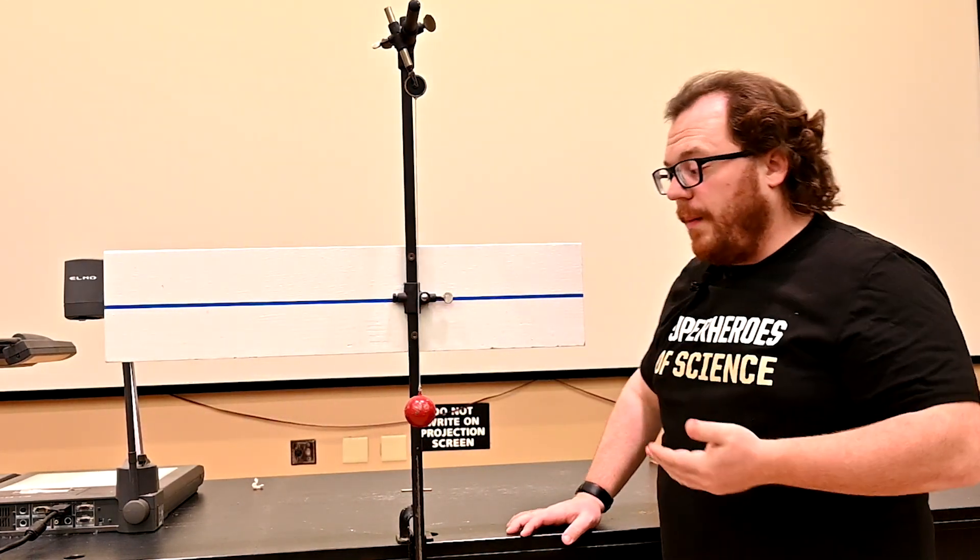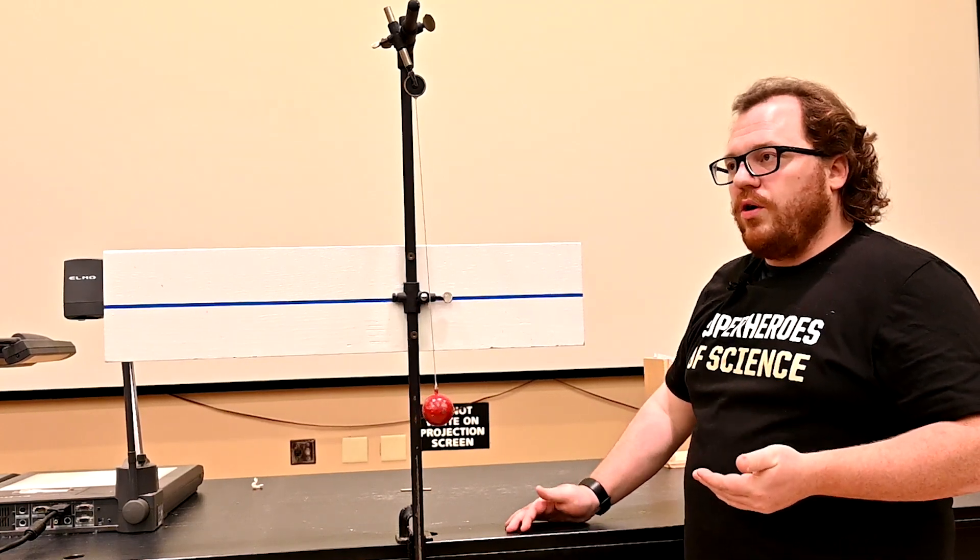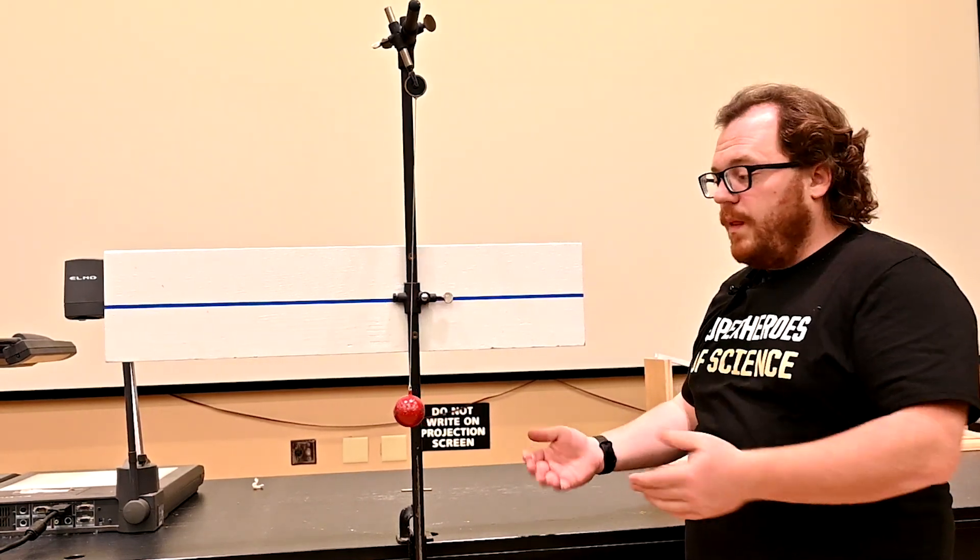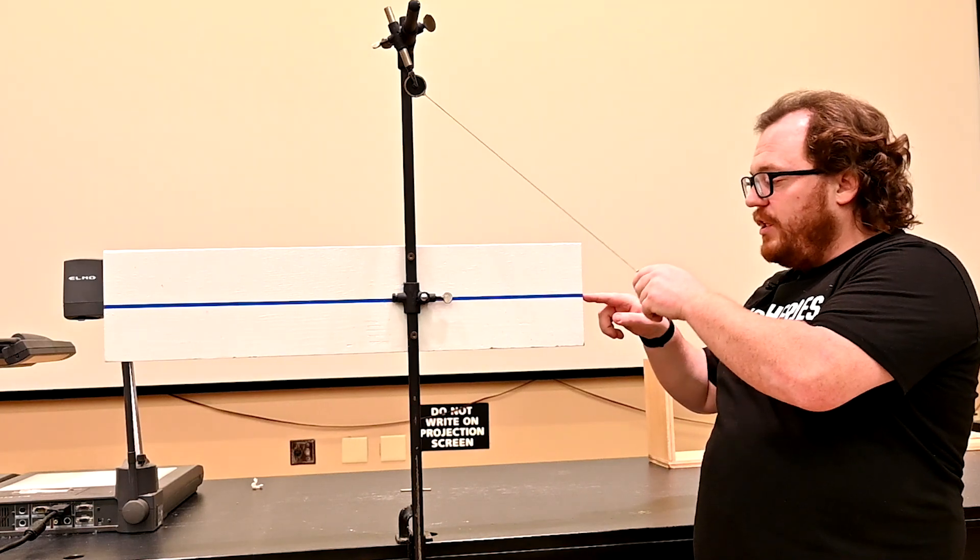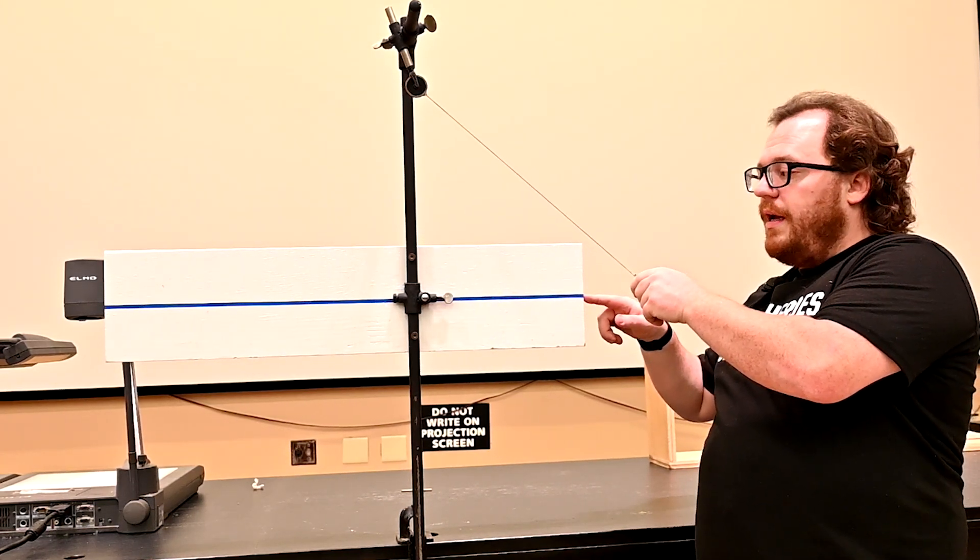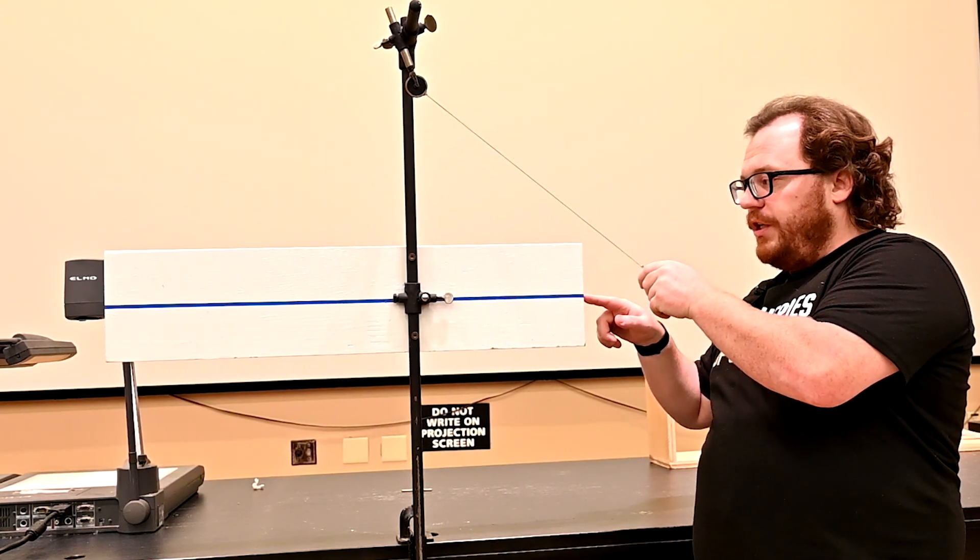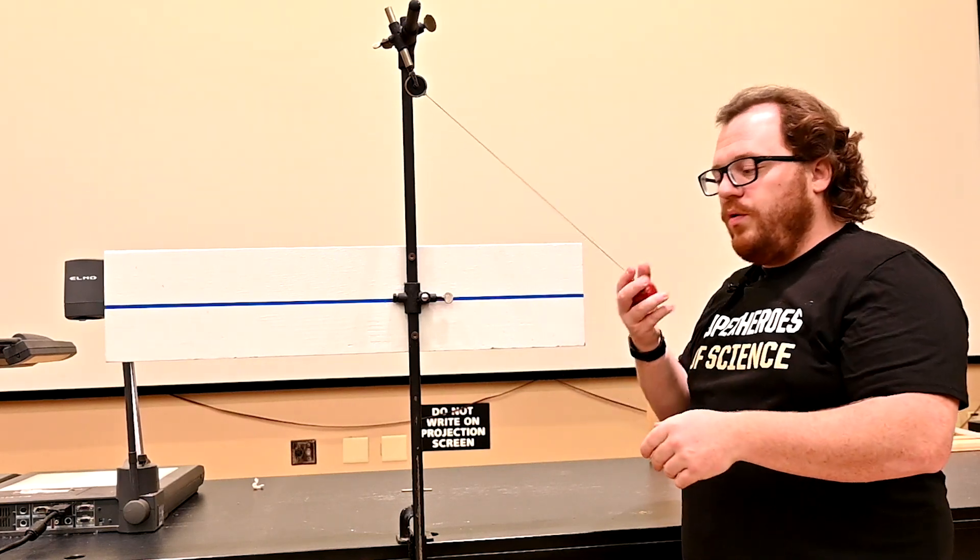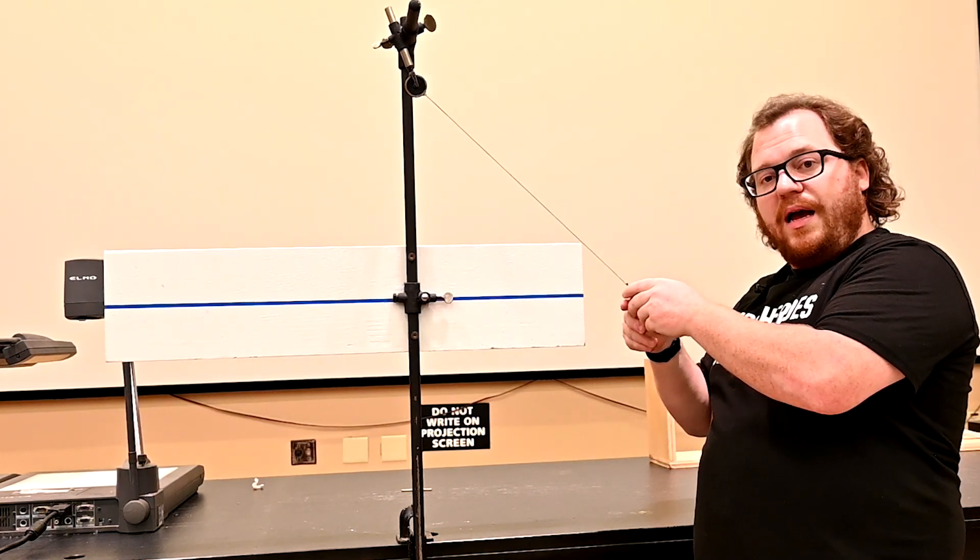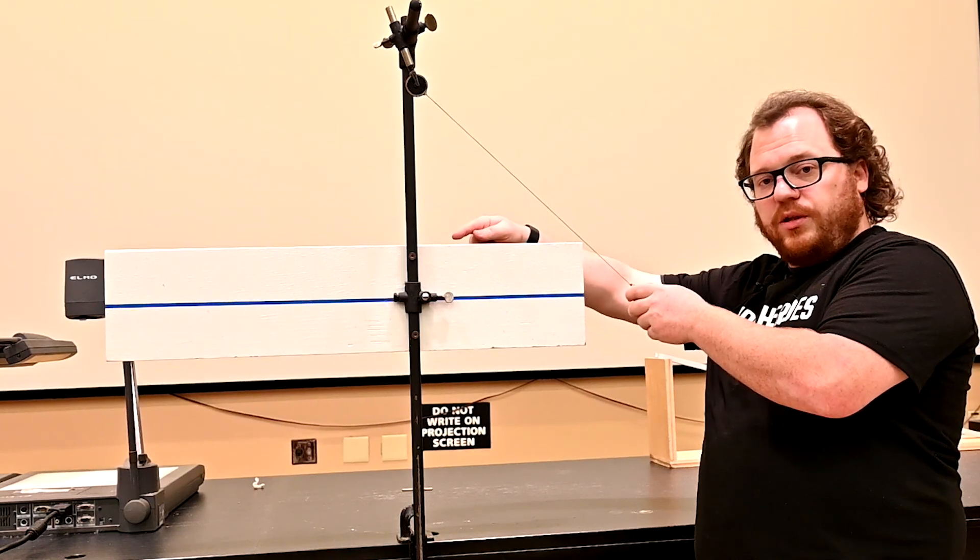A lot of times when we talk about this, we talk about it in terms of conservation of energy. We say that however much potential energy we gave the ball, it's not going to lose that energy. And so it should rise and swing back to the same height on the other side of the pendulum.